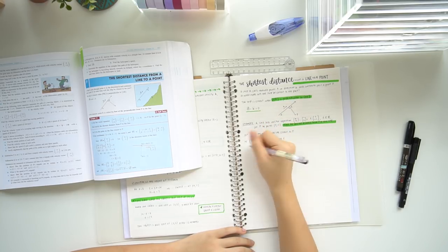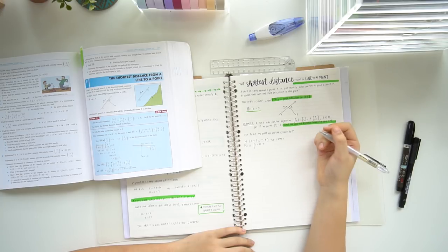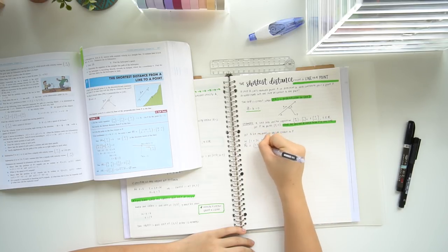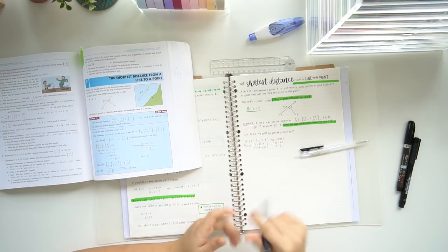So in my case, the worked example is already written for me in that blue box. However, if your textbook doesn't have this, you can always write down any worked examples that your teacher goes through together on the board.